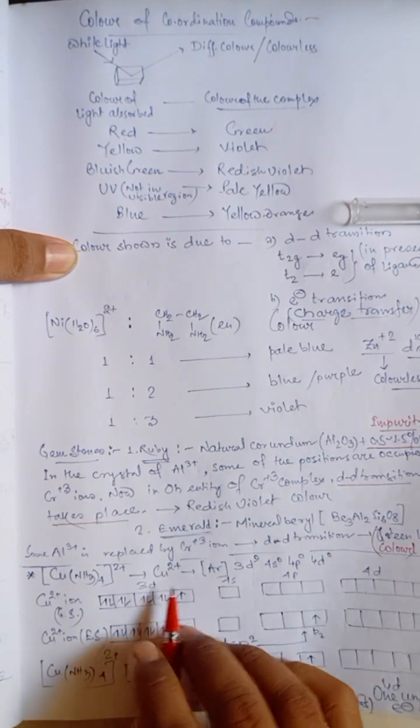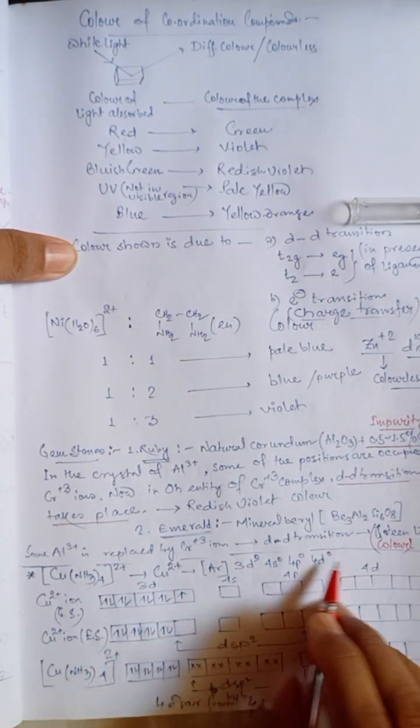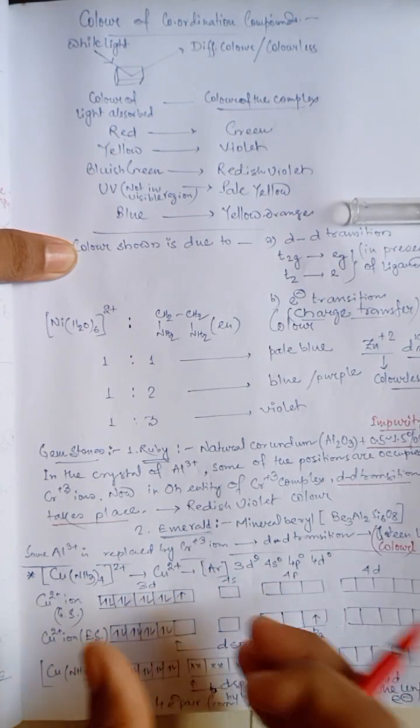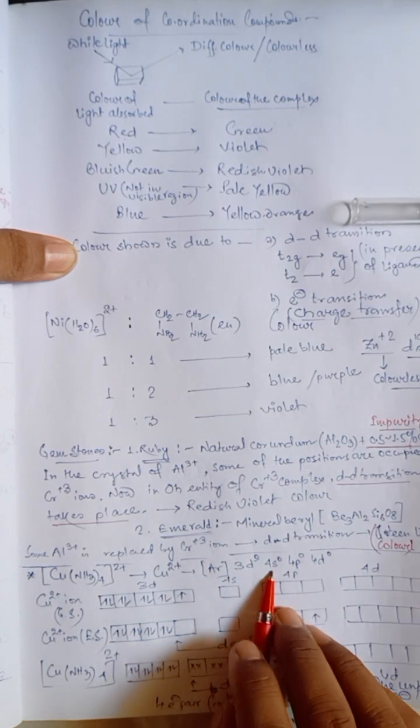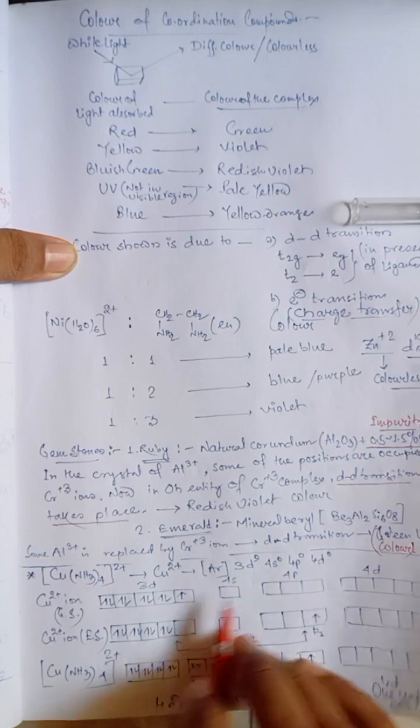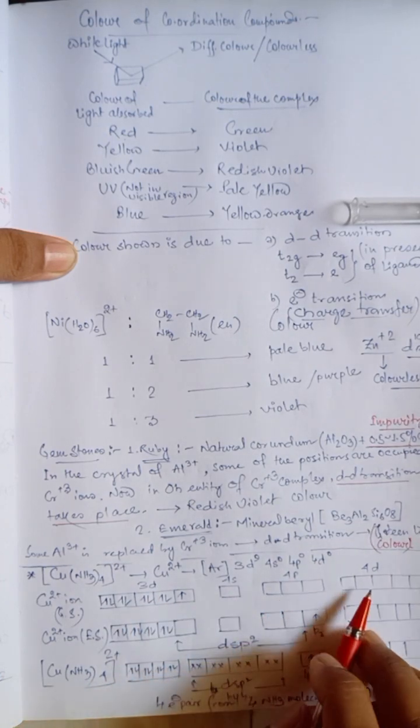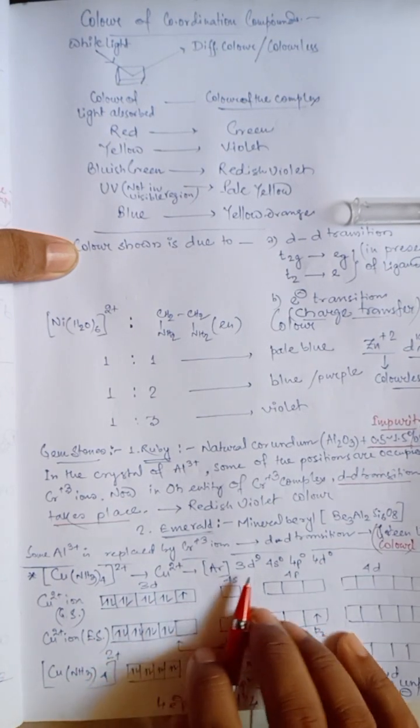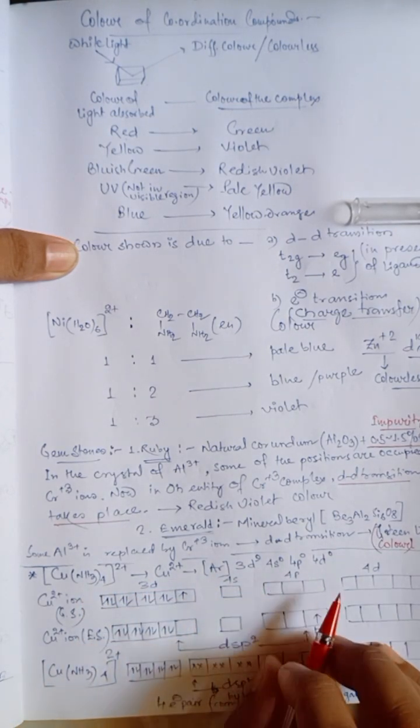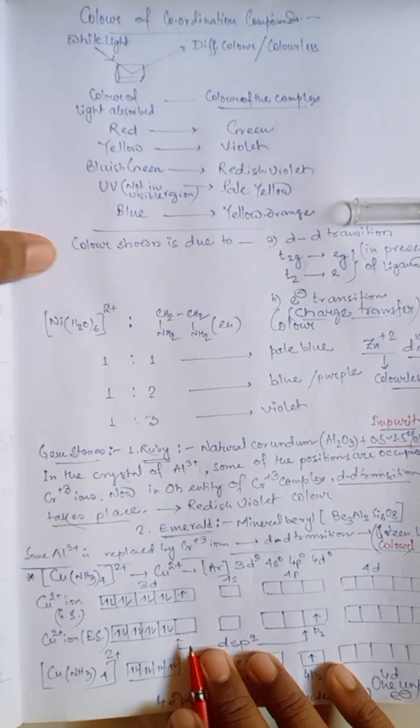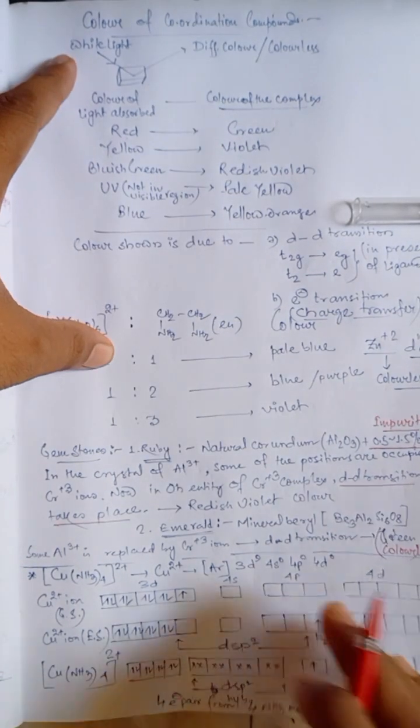D9 system. So, the electronic configuration of D9 system. That is, argon core, 3d9, 4S0, 4P0 and 4D0. As ammonia is a strong-field ligand, it does not tend to get outer orbital complex.